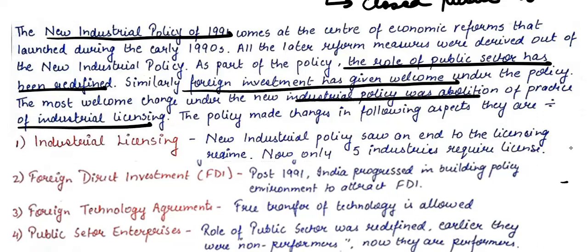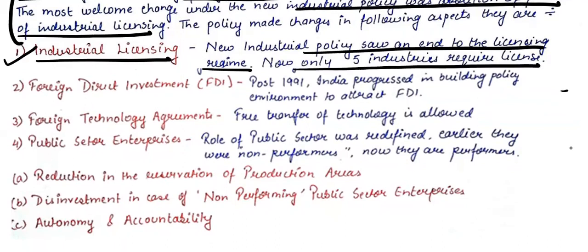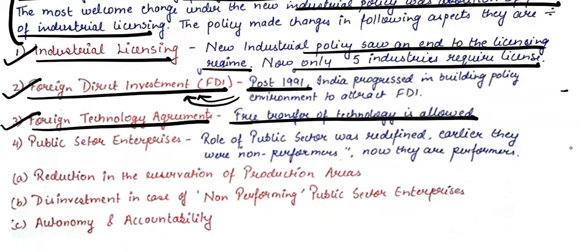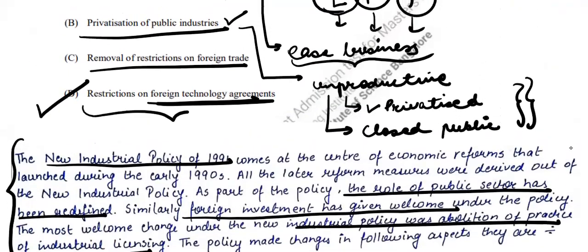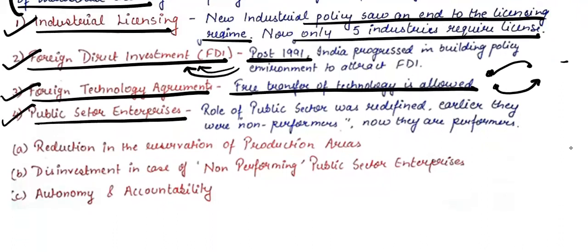The three main changes under the New Industrial Policy were: first, reduction in the number of licenses — ending the licensing regime, with only five industries still requiring licensing; second, Foreign Direct Investment was allowed, permitting the foreign sector to directly invest in India, which only happened after 1991; third, foreign technology agreements — free transfer of technology was allowed with no charges on either side.